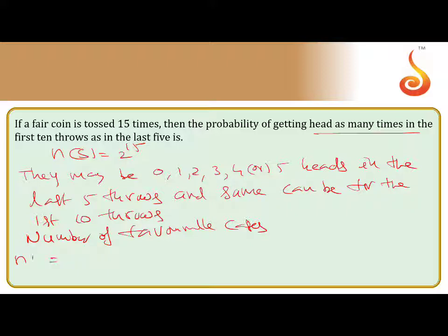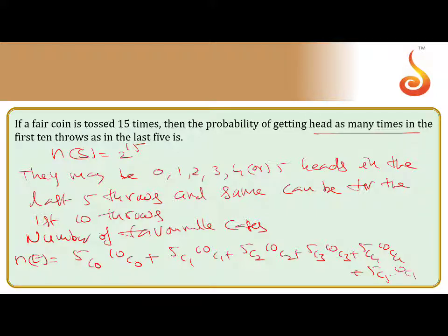Number of favorable cases will be 5C0 into 10C0, that means number of heads 0 in the last 5 throws and 0 in the first 10 throws. Next 5C1 into 10C1 for 1 head, 5C2 into 10C2 for 2 heads, 5C3 into 10C3 for 3 heads, 5C4 into 10C4 for 4 heads, and 5C5 into 10C5.